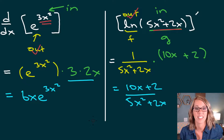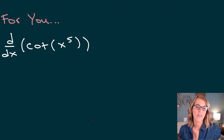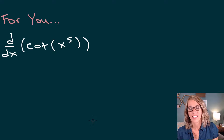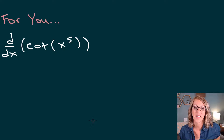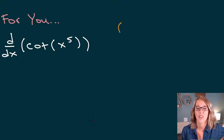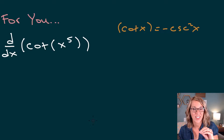This next one is for you. We've got the derivative of cotangent of x to the fifth. Pause this and try it. If you need a hint — the derivative of cotangent of x is equal to negative cosecant squared x. Go ahead and pause the video. See how you do — I know you've got this.